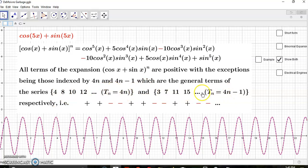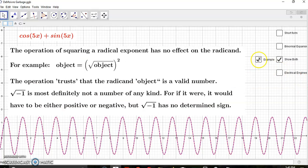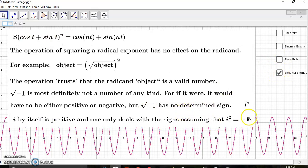So what's happening here? The operation of squaring a radical exponent has no effect on the radicand. If you see a radical like this, the object here is the radicand. When you square this expression here, it does nothing to the radicand. The operation of squaring trusts that the radicand, and in fact the radical itself, object is a valid number. So it trusts that root minus one is a valid number, but it's not. It's more definitely not a number of any kind, for if it were, it would have to be either positive or negative. But root minus one has no determined sign.